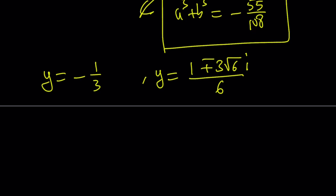And if you back substitute, remember, x is y plus 5 over 6. And if you replace y with negative 1 third, which is negative 2 sixths, you're going to get 3 over 6, which is 1 half. So from here, you're going to get basically x equals 1 half. And the others are also going to give you the complex solutions. You can definitely go for that.